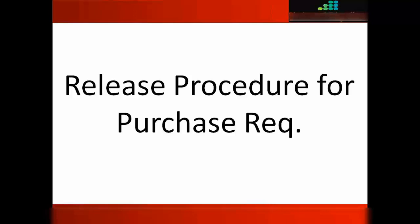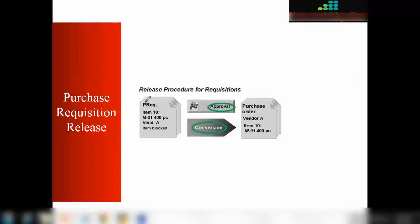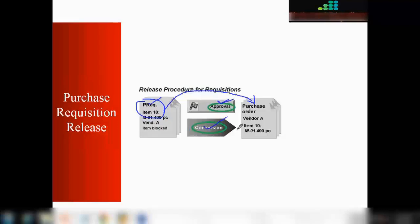Let's look at the difference in functionality when using the release procedure for requisitions versus orders. For purchase requisitions, we want to add an approval step so that no one can convert a purchase requisition into a purchase order unless it has been approved by the purchasing manager or whoever is authorized to approve it. Only after approval can the following functions — like creating a purchase order — proceed.